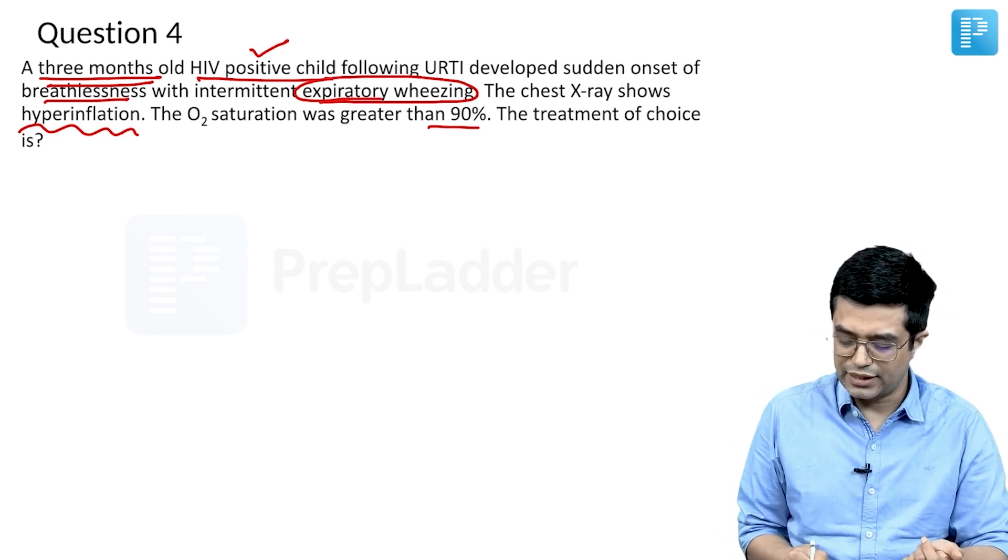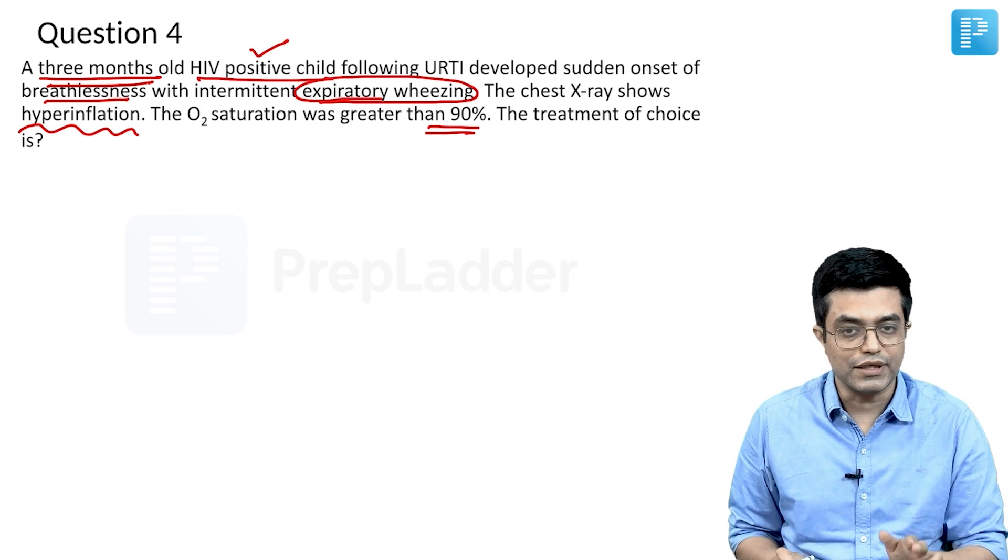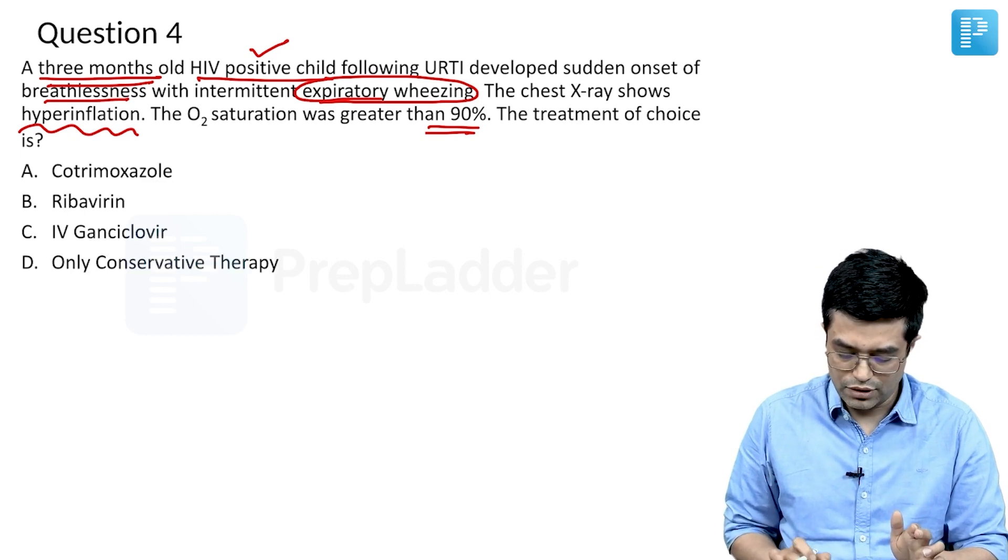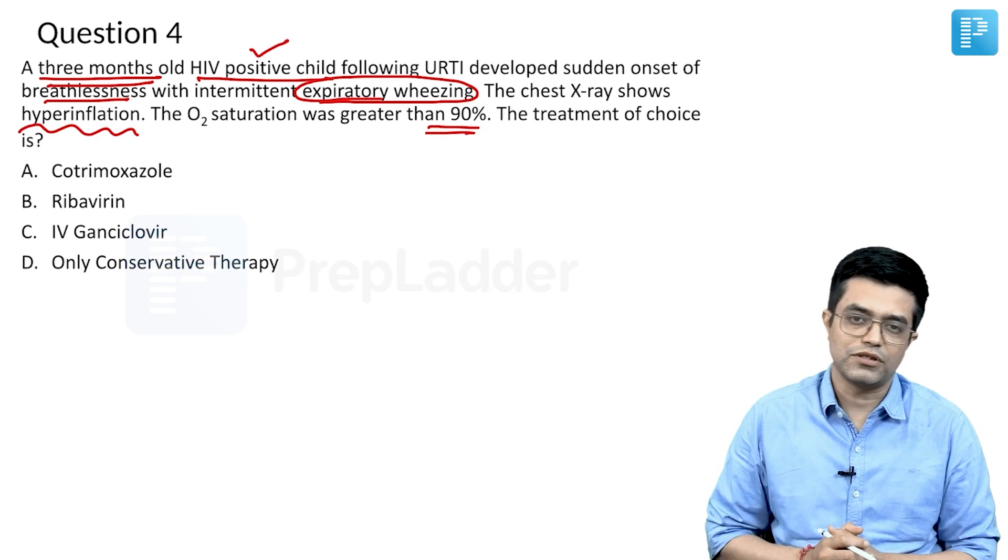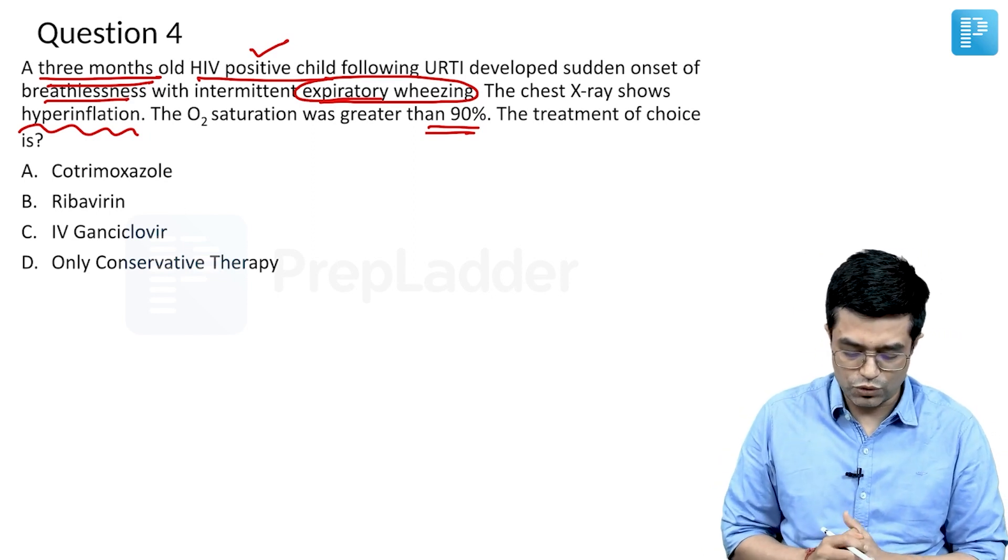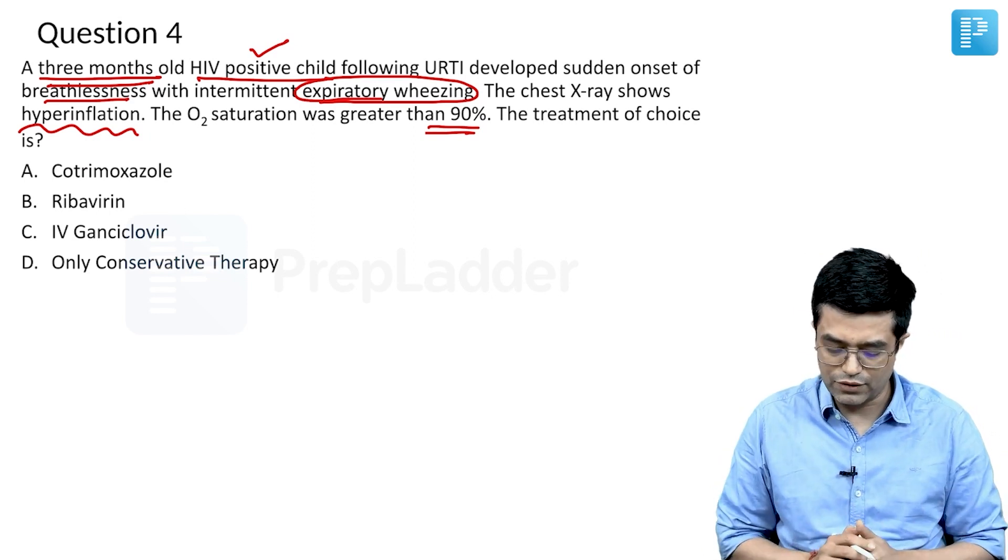Oxygen saturation was greater than 90%. The treatment of choice has 4 options. Because bronchiolitis is mainly a viral infection caused by RSV, there is no role of cotrimoxazole, and IV ganciclovir are ruled out.